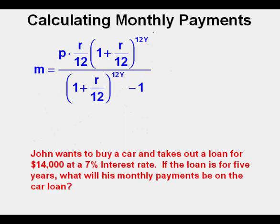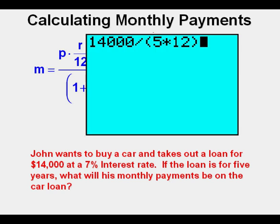Let's work out a problem with the formula. John wants to buy a car and takes out a loan for $14,000 at a 7% interest rate. If the loan is for 5 years, what will his monthly payments be on the car loan? Before working it out, I'm interested in seeing what the payments would be without interest, because that will give me an idea if what I calculate using the formula is anywhere close to reasonable. To do that, I divide the principal amount, $14,000, by 5 years times 12 months. When we press enter, we get $233.33.